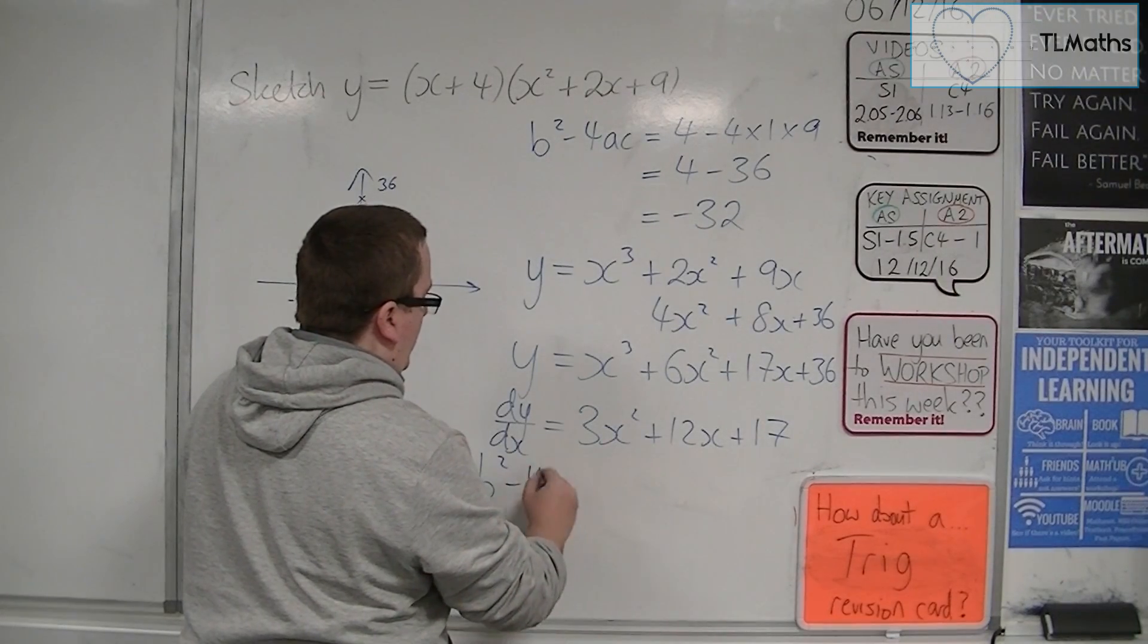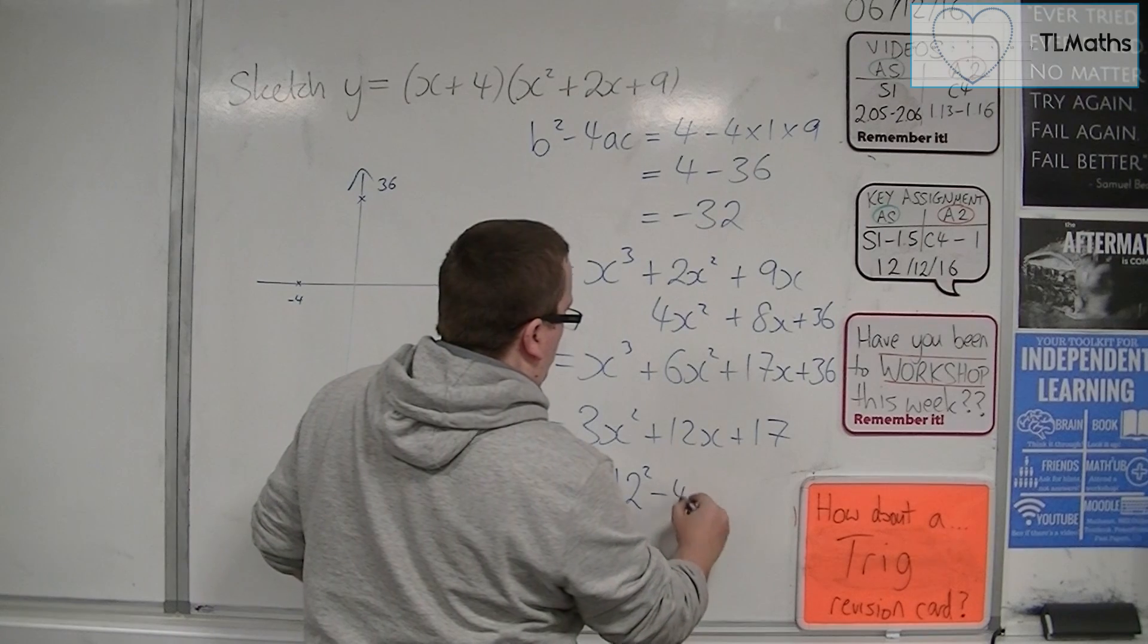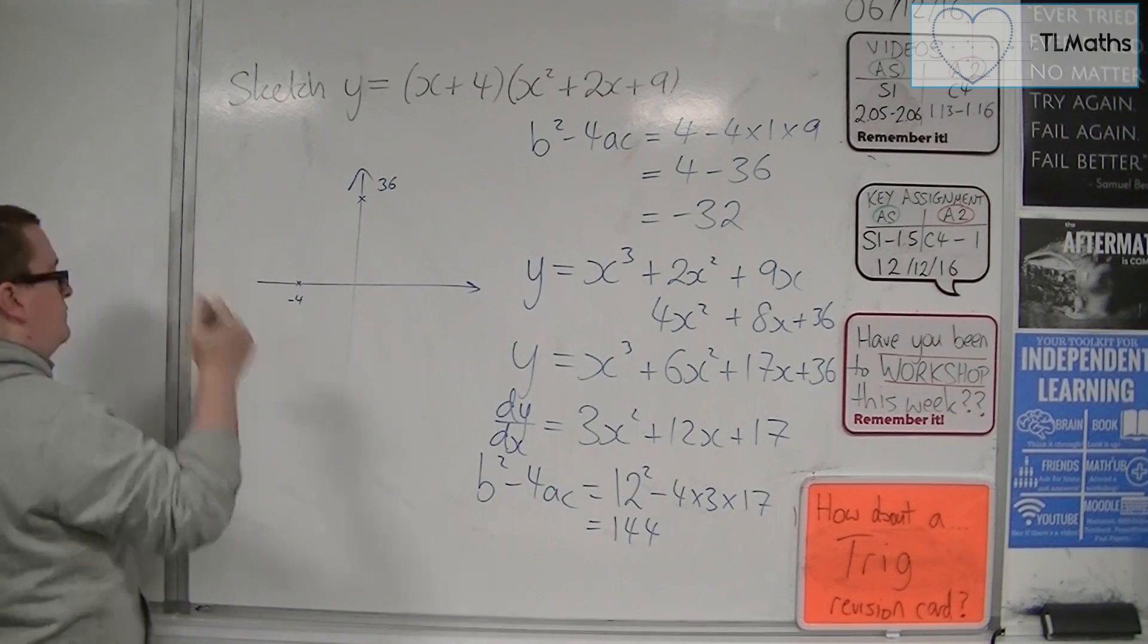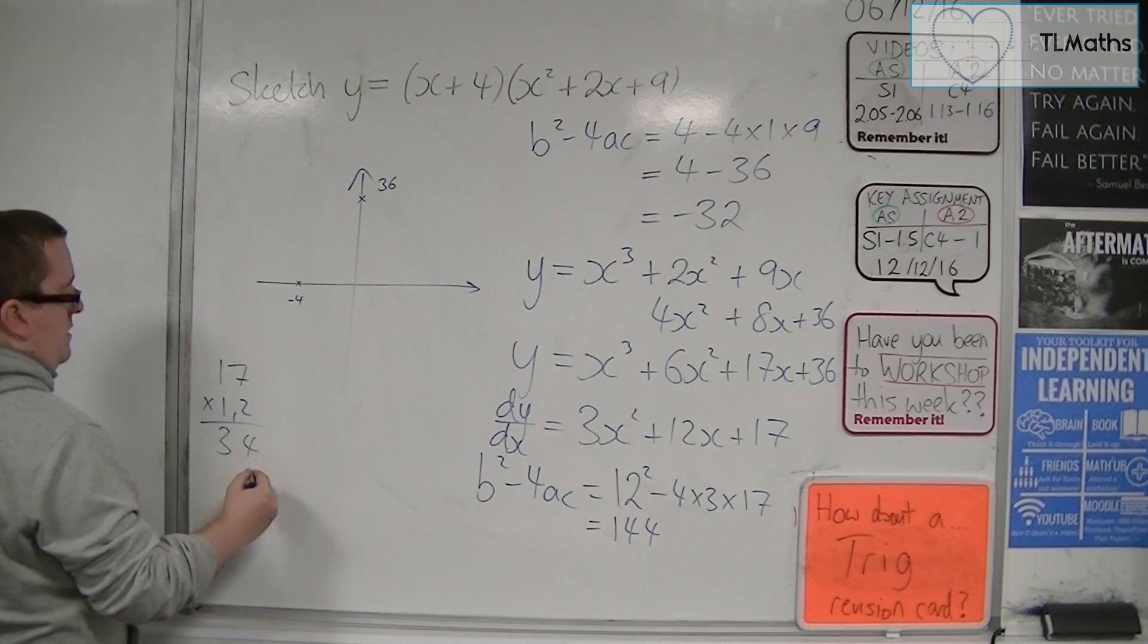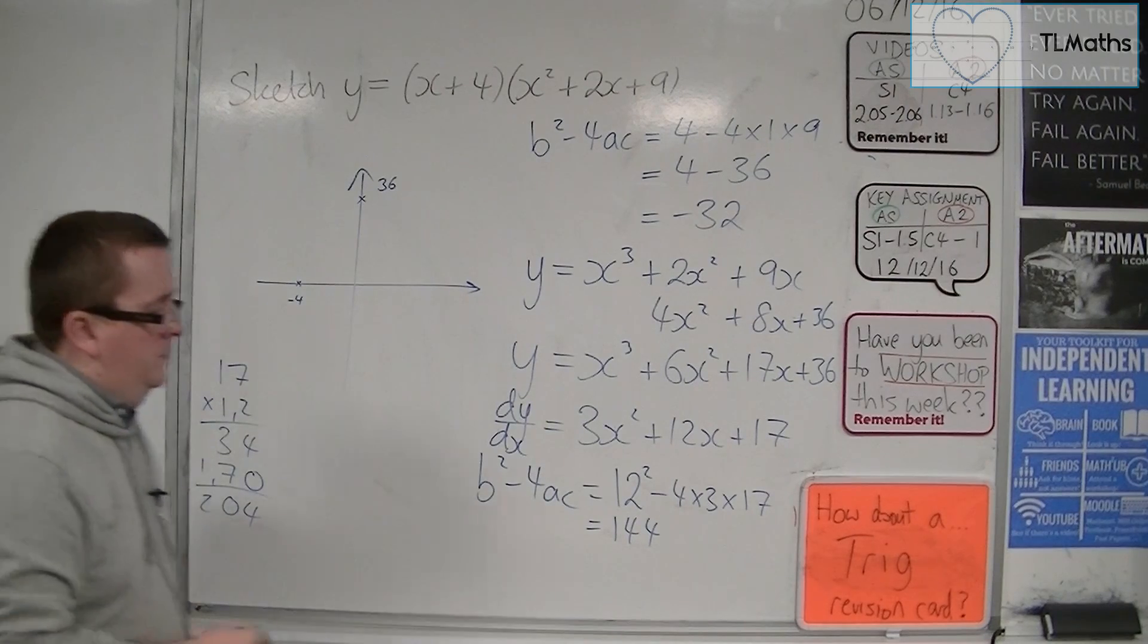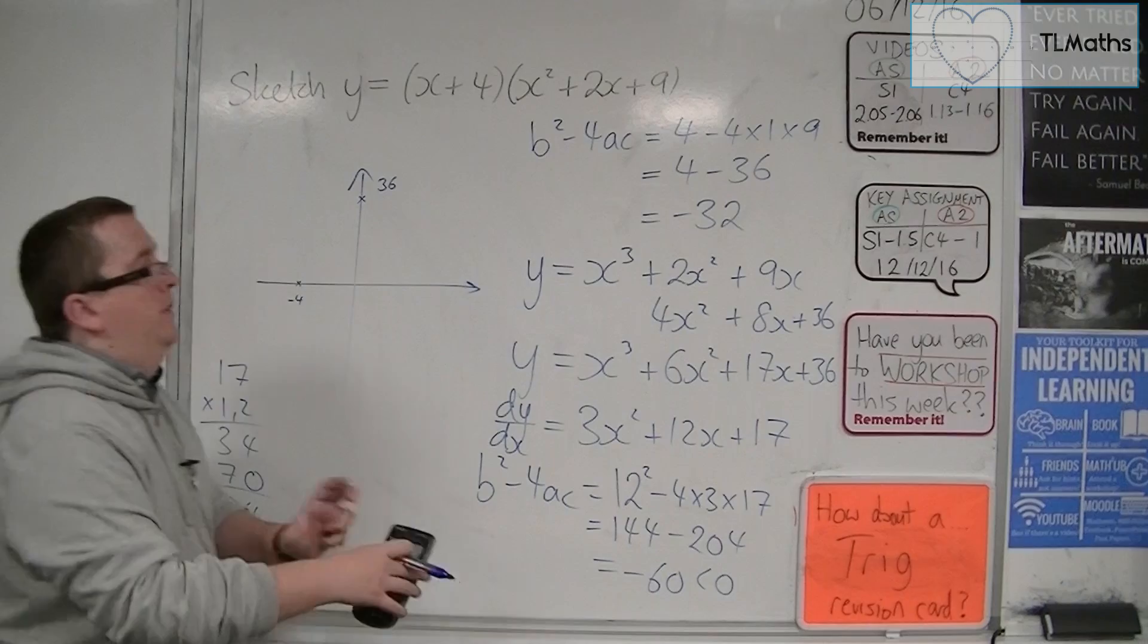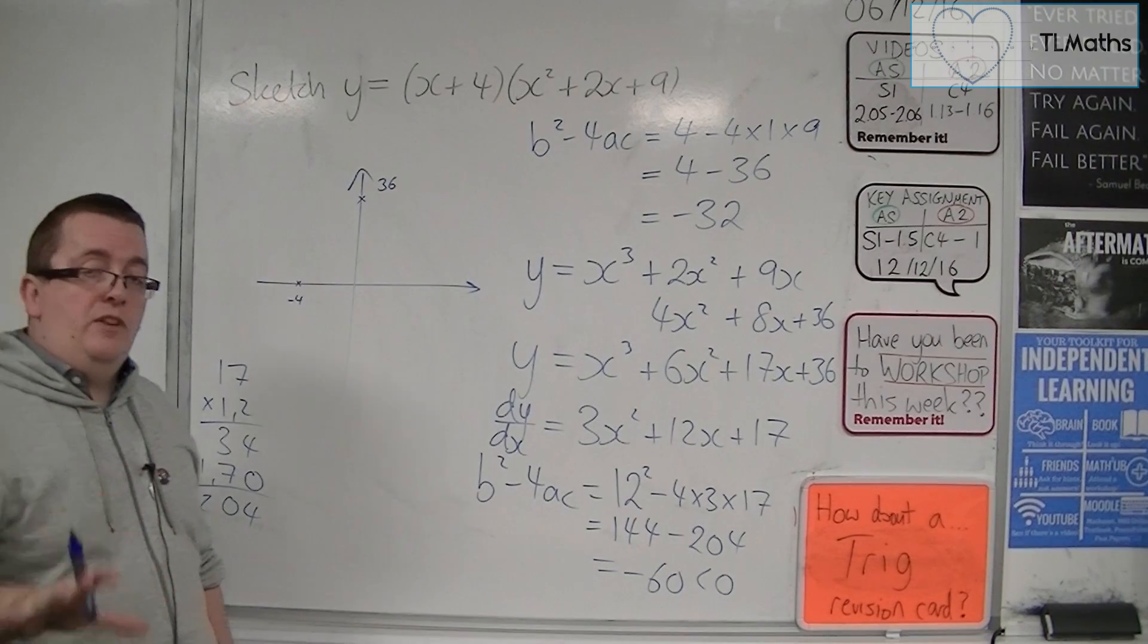So let's check that. We're effectively doing the discriminant again. So this time we're going to have 12 squared, take away 4 times 3 times 17. So 144, now that's 12 times 17. So 17 times by 12, 204. So 144 take away 204 gets me down to minus 60. Now, that's clearly negative.